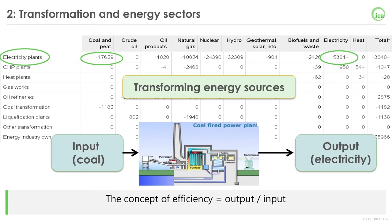The second block of rows contains the transformation and energy sectors. This block covers all types of transformation of one energy product or fuel into another different one. The main example of a transformation process is the generation of electricity, which transforms coal, for example, into a different energy form — electricity. In that case, as you can see on the table, coal being the input has a negative number, while electricity, the output, has a positive one.